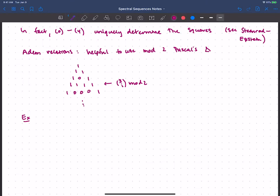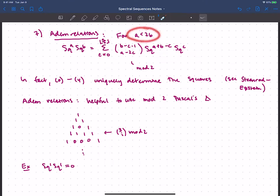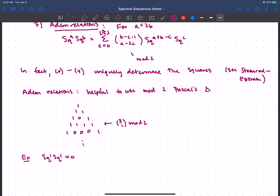So some good examples, you can work out that square one square one is zero. I should maybe emphasize, going back to this, that this is for A less than two B. So I don't have any relation for square two square one. But one is less than two times one. So, okay, indeed, there is a relation for square one square one. And you go ahead and write that out. And there's only going to be one term. And you see that this binary coefficient ends up being zero. So that one goes away.